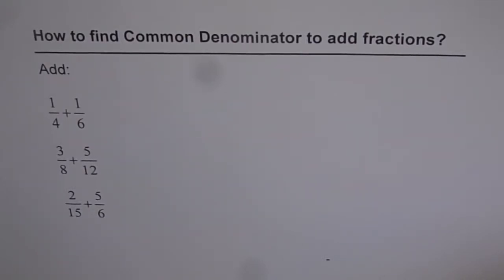How to find common denominator to add fractions? So we have three fractions here to add. One is 1 over 4 plus 1 over 6. The other one is 3 over 8 plus 5 over 12. And then 2 over 15 plus 5 over 6.